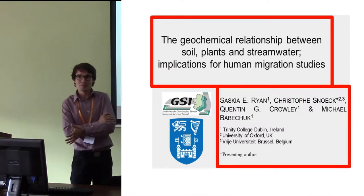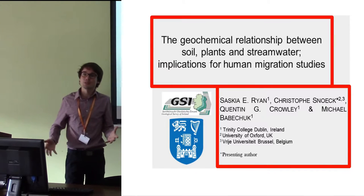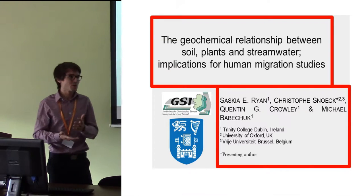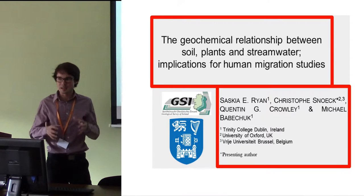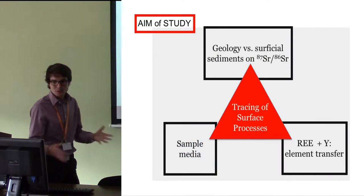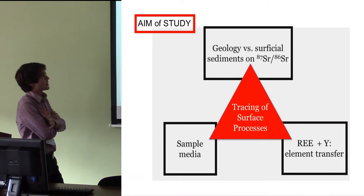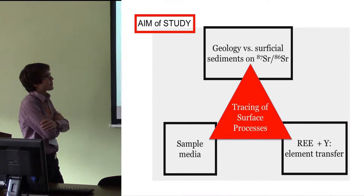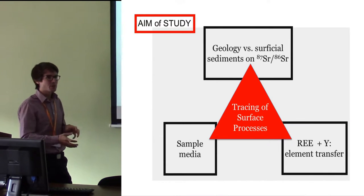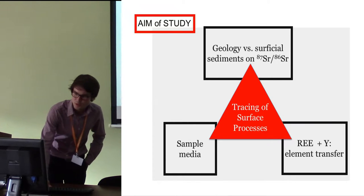Personally, I do not like using small mammals — modern ones because I think it's unethical, and archaeological ones because you need to find them and they're very difficult to find. So even though archaeological small mammals are probably the best, they are not always possible to use for large-scale mapping and high-density sampling. So here we focus on soil, plants, and streamwaters, comparing these different sample media to look at the strontium isotopes and rare earth elements, and to see what's the impact of the geology or the surficial sediments on these isotopes and rare earth elements.